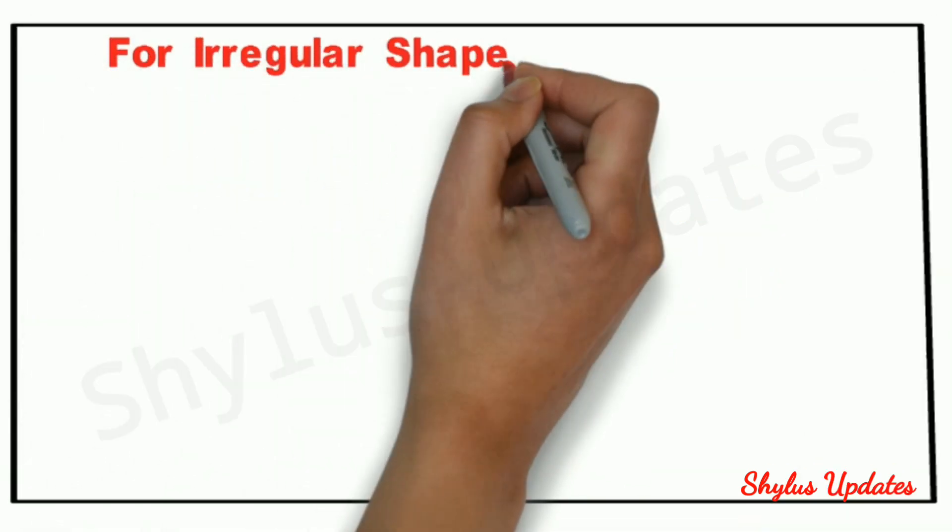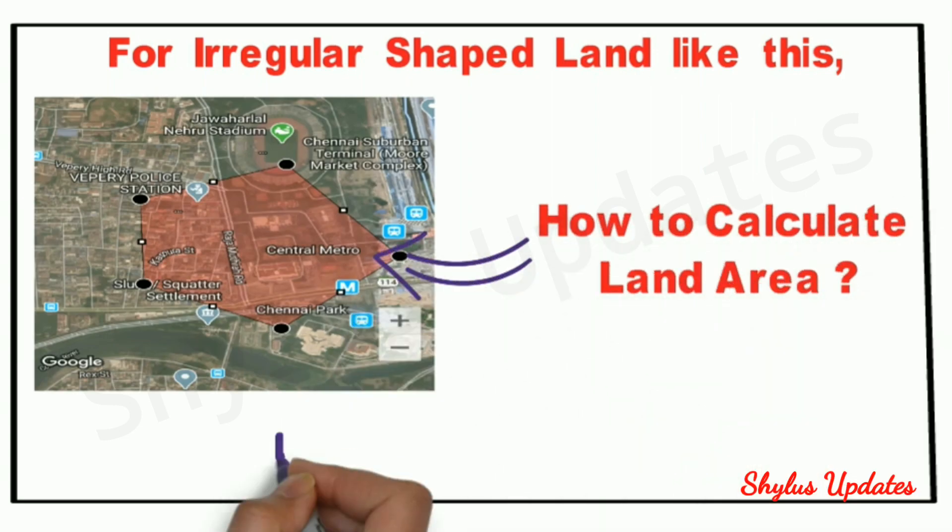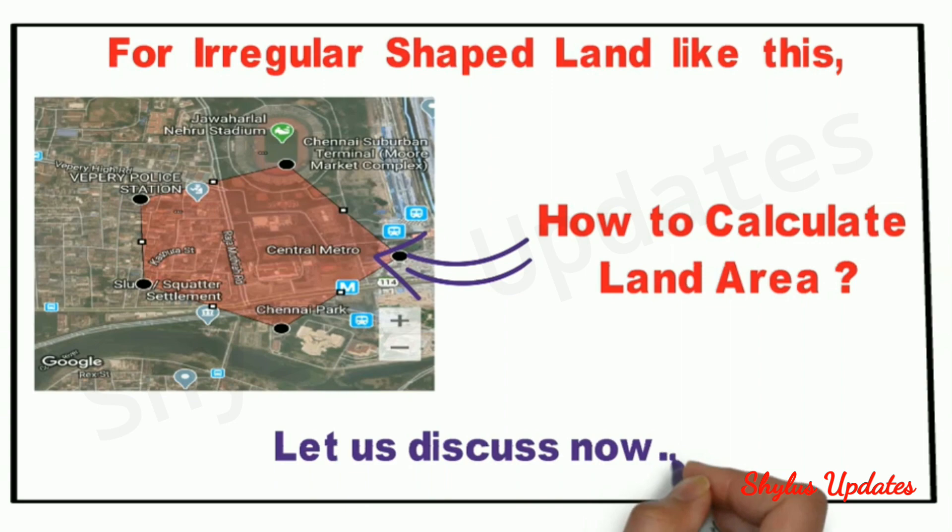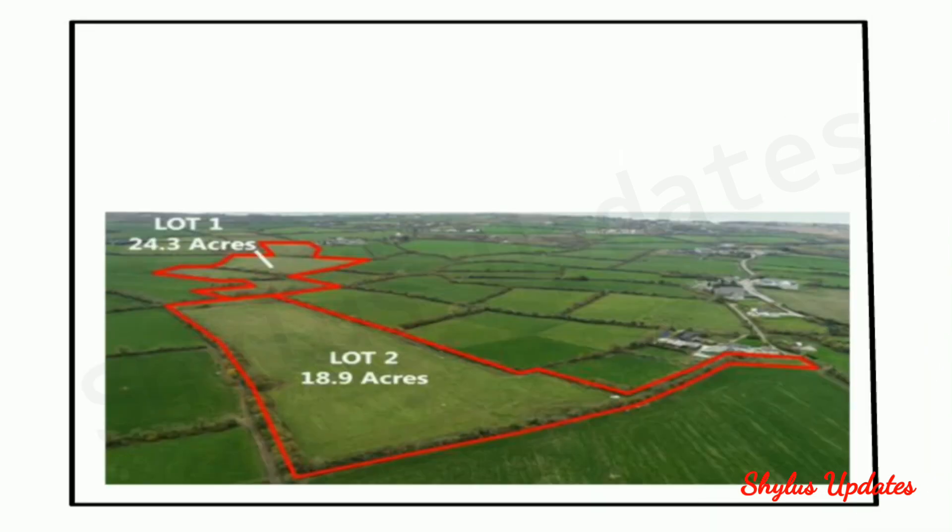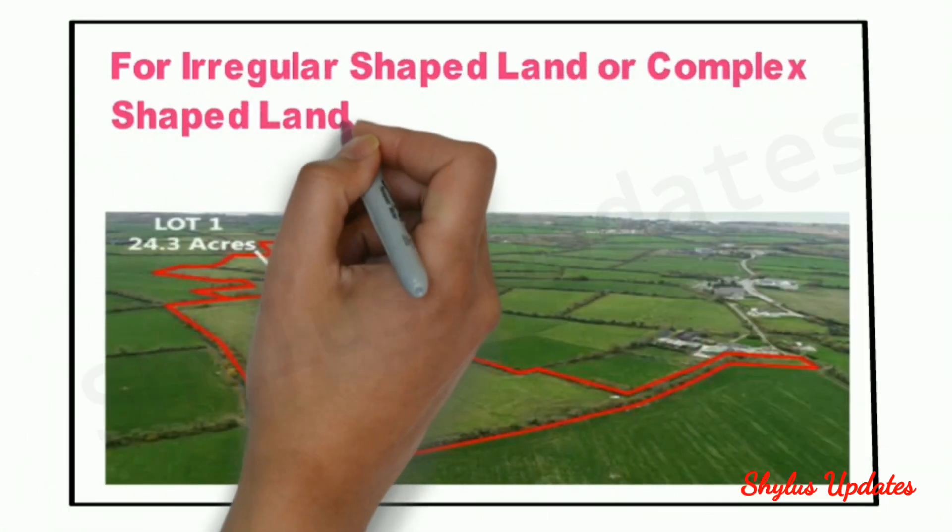For irregular shaped land like this, you can see in this picture—how to calculate land area? Let us discuss now. For irregular shaped or complex shaped land, we can use Heron's formula.